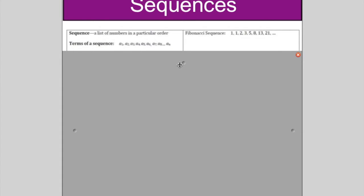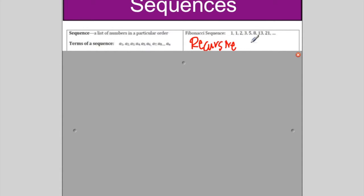A sequence is a list of terms in a particular order. Yesterday we talked about the Fibonacci sequence — 1 plus 1 gives you 2, 1 plus 2 gives you 3, 2 plus 3 gives you 5. When you have to use more than one term that's right before to get the next one, that's what we call a recursive sequence, using the number of terms before to get to the next one.